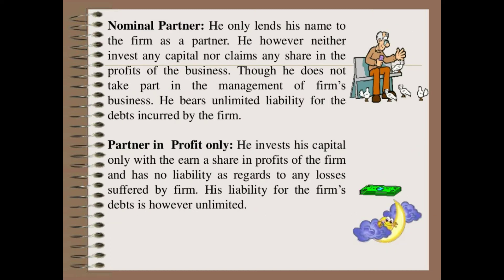Nominal partner: A nominal partner only lends his name to the firm. He neither invests any capital nor claims any share in the profit of the business. Though he does not take part in management, he bears unlimited liability for the debts incurred by the firm. He is a nominal person for documentary purposes only — profit or capital investment is not shared with him.